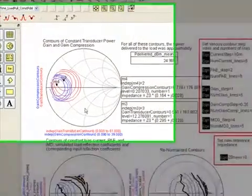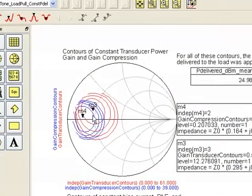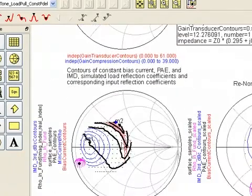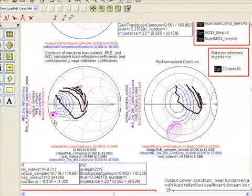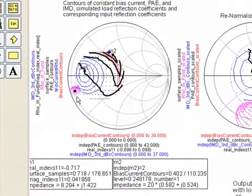The data display shows gain and gain compression contours as well as contours of power added efficiency, intermodulation distortion, and bias current. The purple lines show how the input reflection coefficient varies as a function of the load reflection coefficient.